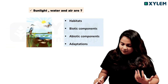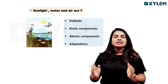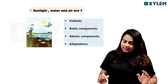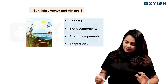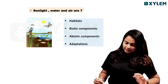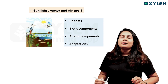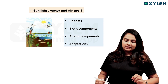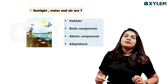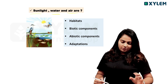Next question: Sunlight, water, and air are — options are: habitat, biotic components, abiotic components, and adaptations. Sunlight, water, and air are abiotic components.